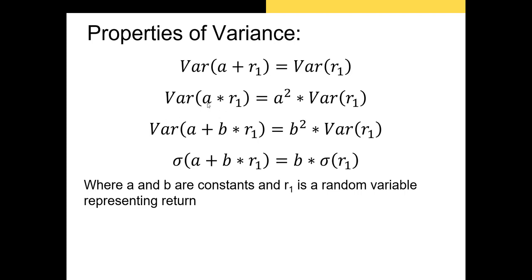Next, we have the variance of a constant a times the return. In that case, we just take the constant outside the variance and square it. So variance of a*r1 becomes a squared variance of r1. Next, we have the variance of a plus b times r1. In that case, this second rule applies again. The constant doesn't matter. It's just shifting our values upward or downward. But this second constant b, we take it to the outside of the variance formula and square it. So this entire thing becomes b squared times the variance of r1.